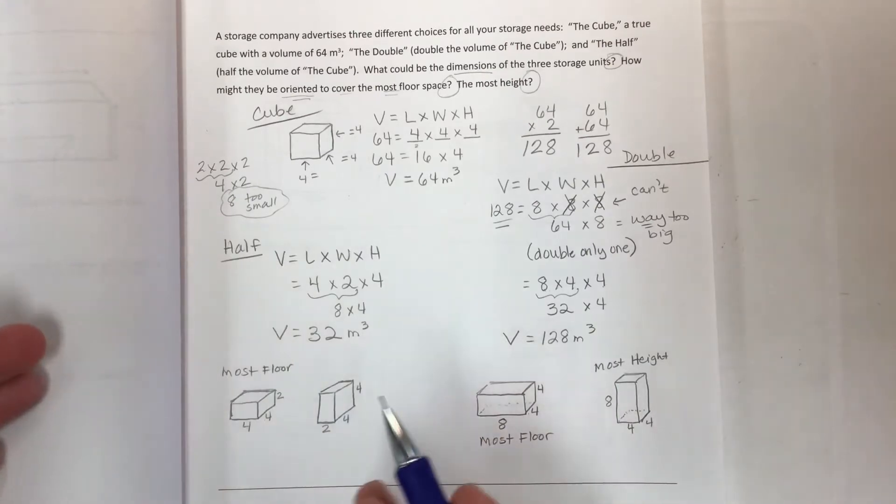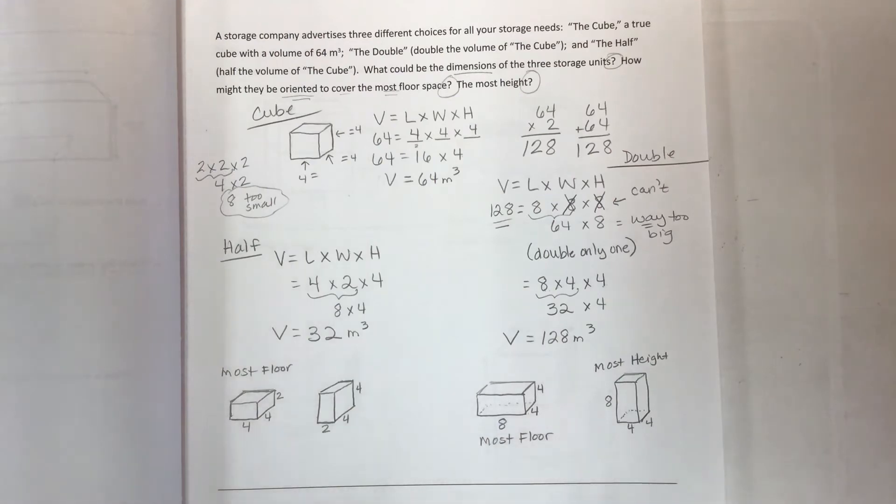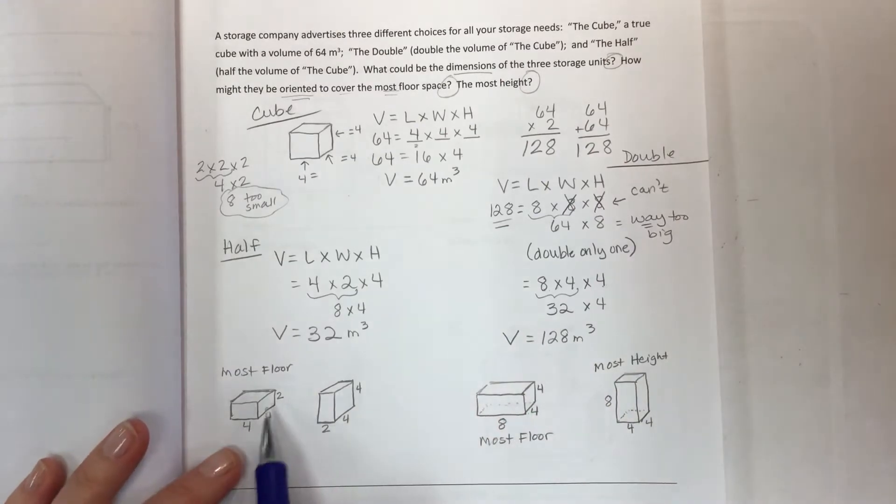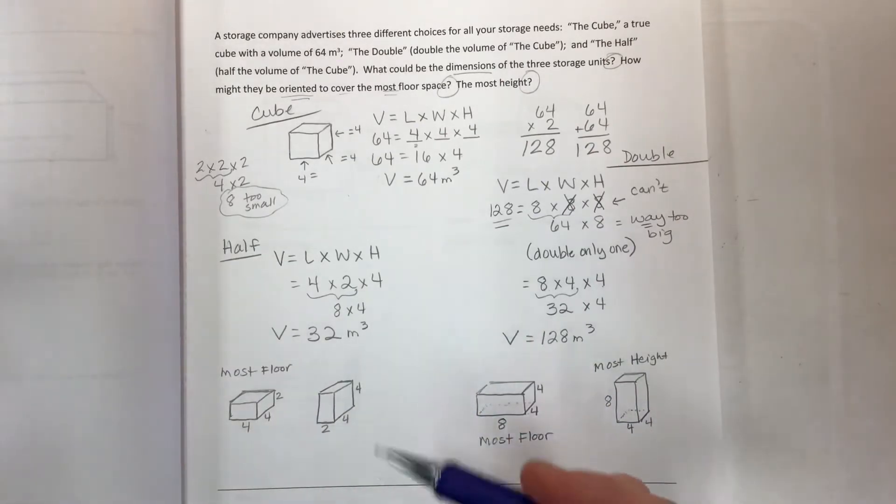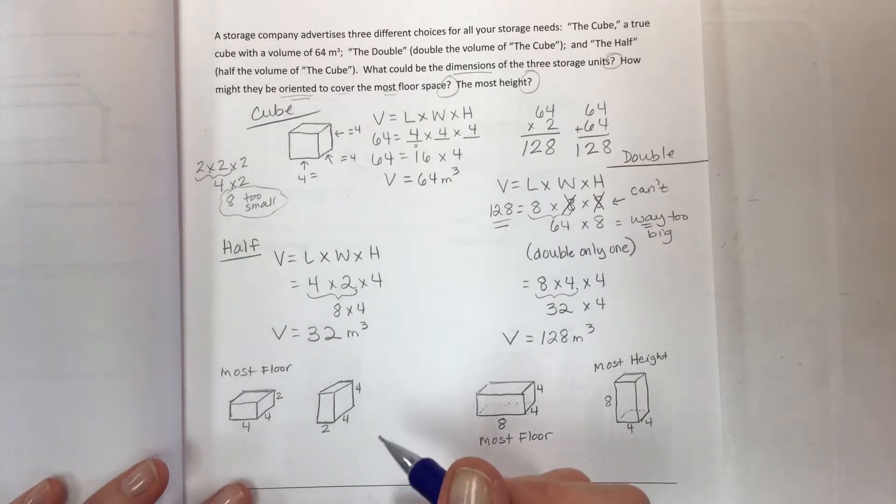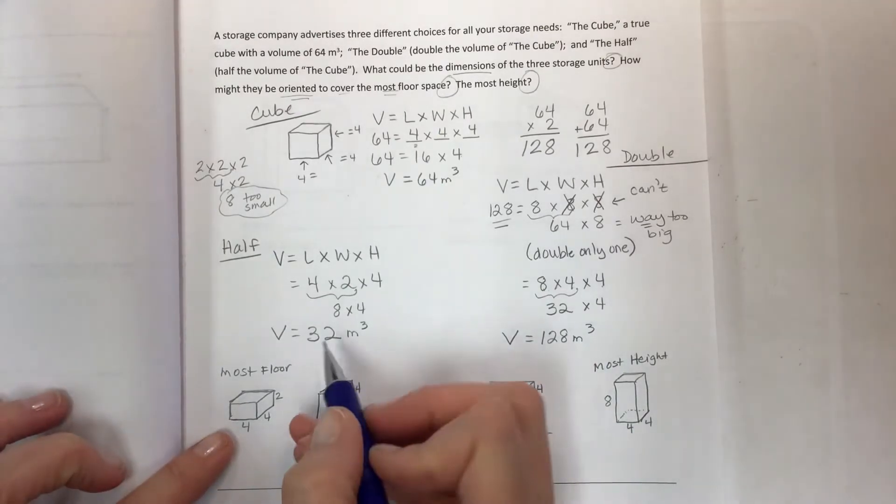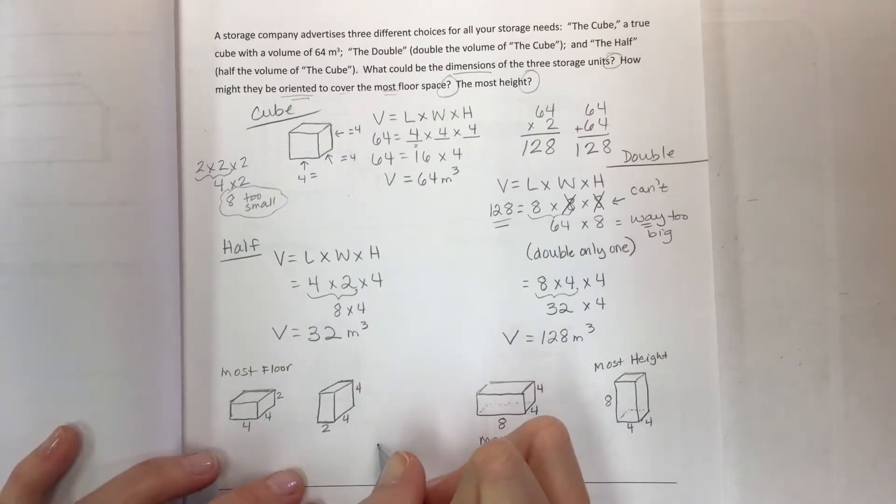So you could have, instead of a nice boxy space, maybe you need to store a flagpole. Could you store a flagpole in a shape like this? No. But could you store it in a 1 by 1 by 32 meter space? Yes.